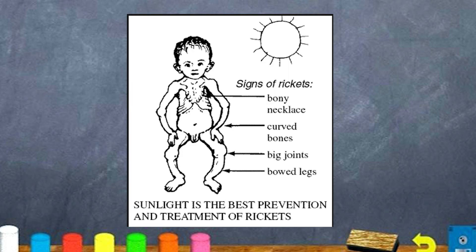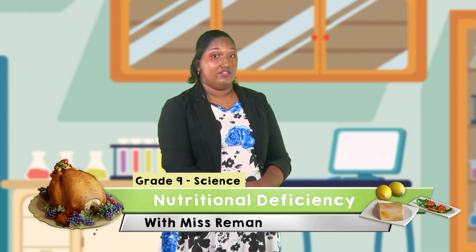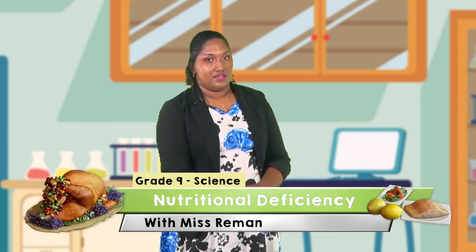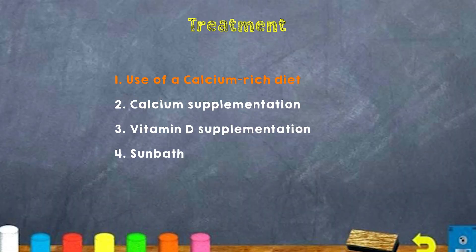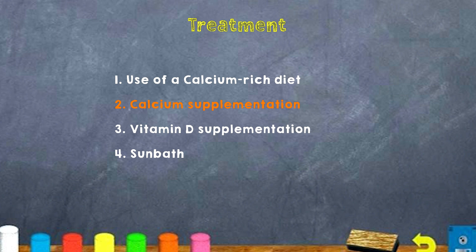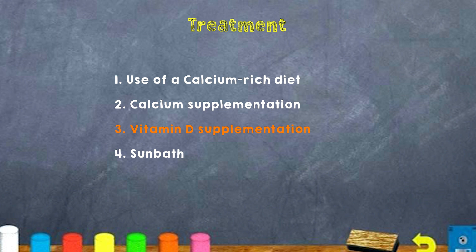Here you can see a picture showing signs of rickets — curved bones, big joints and bowed legs. Sunlight is the best prevention and treatment of rickets. Remember, rickets is caused by a vitamin D deficiency. To treat a lack of calcium we use: 1) a calcium-rich diet, 2) calcium supplements, 3) vitamin D supplements, or 4) sitting in the sun for a little bit.